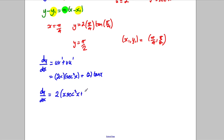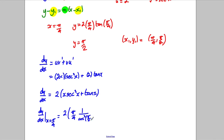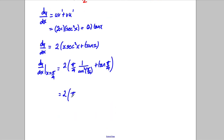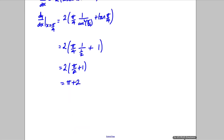Evaluating at x equals π/4: dy/dx equals 2[(π/4)·sec squared(π/4) plus tan(π/4)]. Now cos(π/4) equals √2/2, so cos squared(π/4) equals 1/2, meaning sec squared(π/4) equals 2. So we get 2[(π/4)·2 + 1] equals 2[π/2 + 1] equals π + 2.